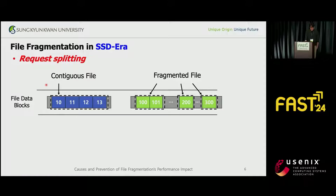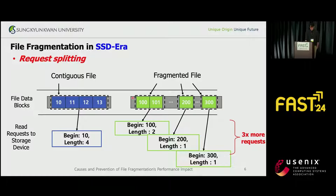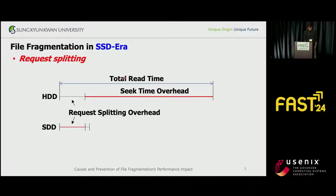A paper pointed out that request splitting is the primary cause of the performance drop from file fragmentation. Read requests to the storage device contain the start address and the length of data to read. When a file's data is stored contiguously, you need to perform only a single read request. But if the file is fragmented into three pieces, the operating system must translate the file read operation into three separate read requests. This is called request splitting.